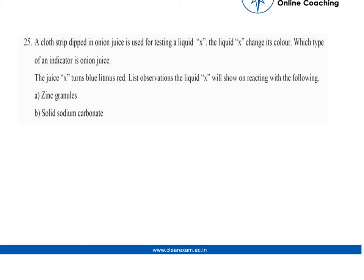Let me take the highlighter. A cloth strip dipped in onion juice is used for testing a liquid X and the liquid X changes its color. Which type of an indicator is onion juice? So this is one of the practical based questions. It'll use that knowledge of yours also. This on this slide the question is slightly incomplete, let's go to the next slide where there is the question.